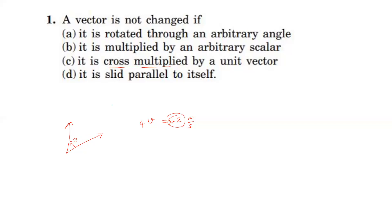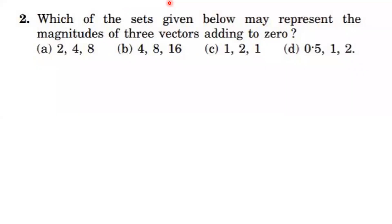Last option: the vector is slid parallel to itself. When a vector is slid parallel to itself, the magnitude does not change and the direction also does not change. So when a vector is slid parallel to itself, magnitude and direction do not change, meaning the vector is not changed. Therefore, option D is correct.